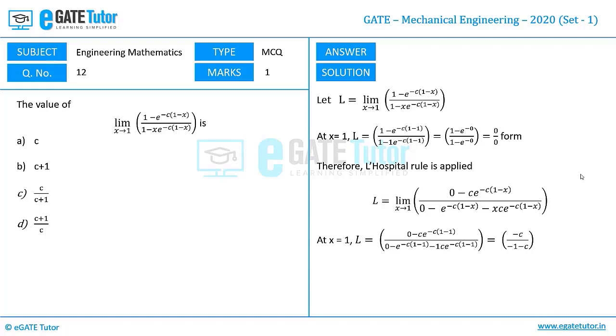We get minus c by minus 1 minus c. So here we can take minus as common from both numerator and denominator and cancel out. So finally, the value of the given limit turns out to be c/(c+1).